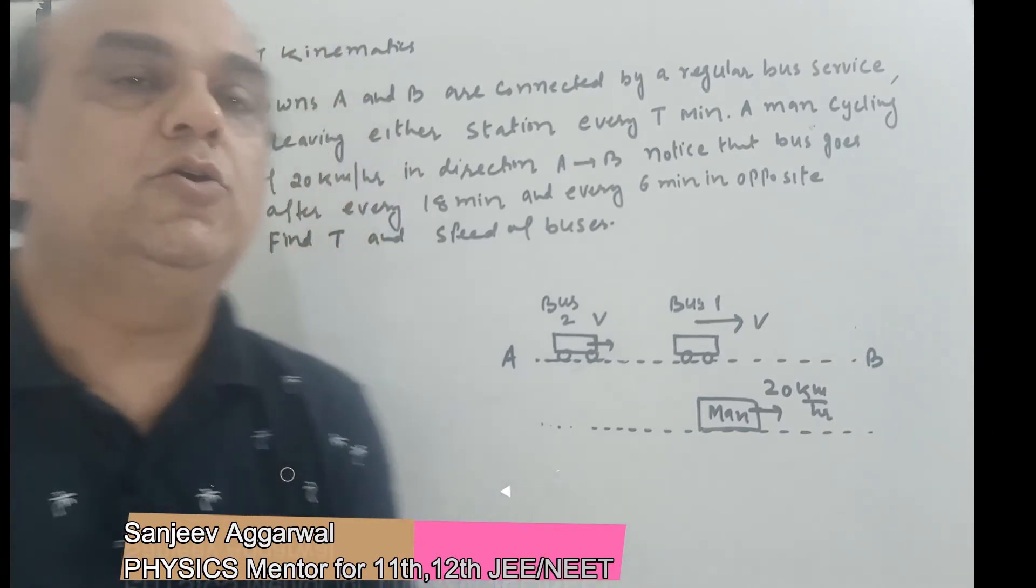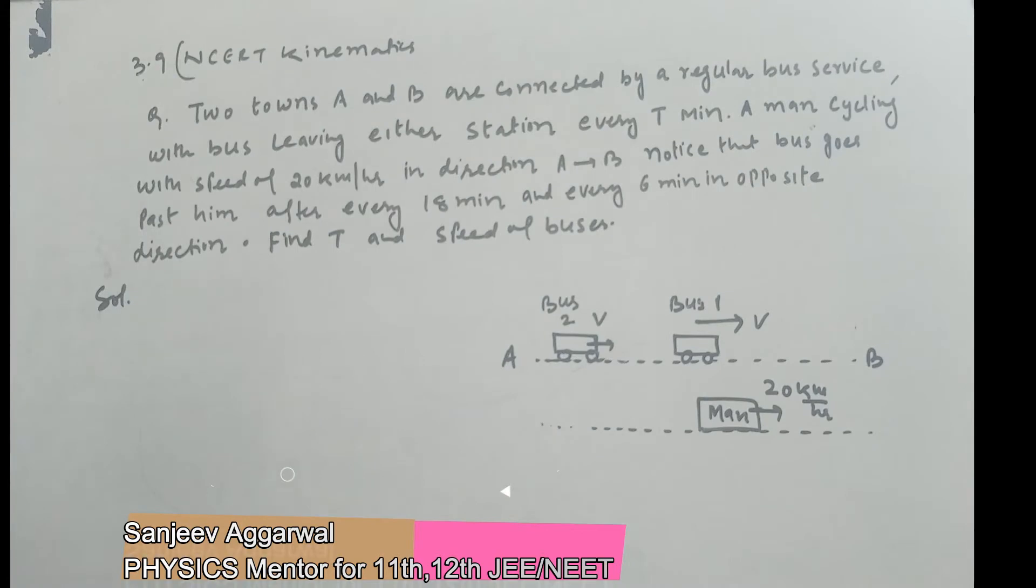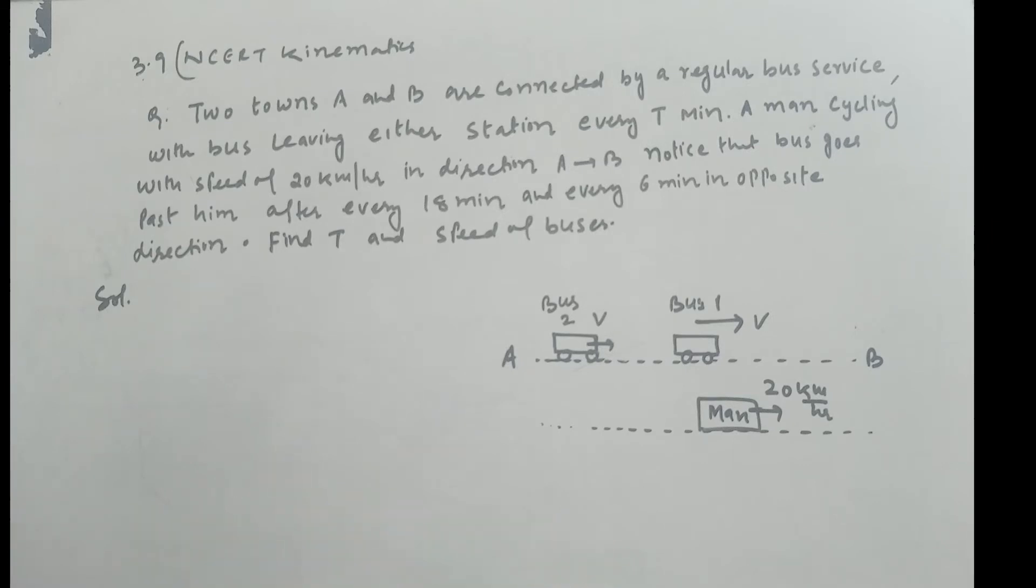Let us read out the problem first. Two towns A and B are connected by regular bus service with the bus leaving either station every 10 minutes. A man cycling with a speed of 20 km per hour in direction A to B notices that a bus goes past him after every 18 minutes and every 6 minutes in the opposite direction.